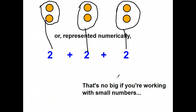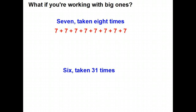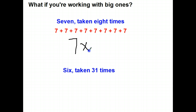Two plus two plus two. Writing it out that way is not a big deal if you're working with small numbers. But you're not always working with small numbers. What if you're working with bigger ones? Seven taken eight times would be seven plus seven plus seven plus seven plus seven plus seven plus seven plus seven. That's a lot of plus sevens — it's hard to keep up with. So rather than write all that out, we simply write it as seven taken eight times, which happens to be 56.